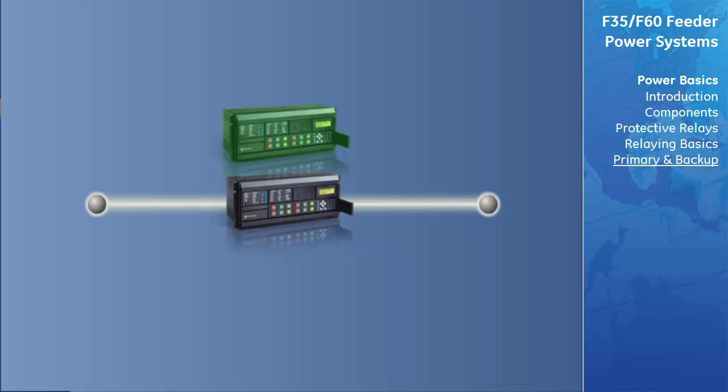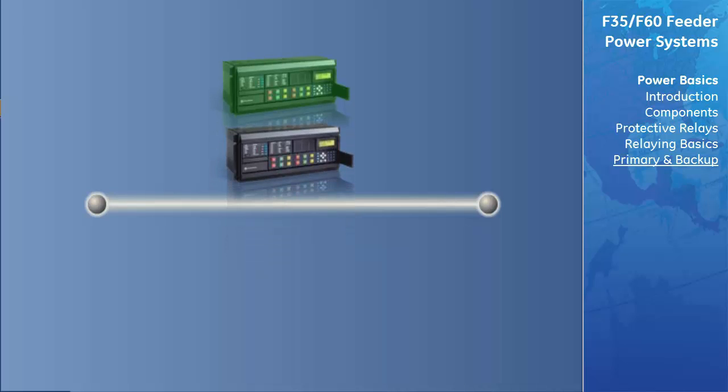Local backup protection is often used to protect against failure of both the primary relaying system and the associated circuit breaker. The only potential drawback is that local backup relaying often uses the same CTs, VTs, and circuit breakers, which can fail, likely resulting in both the primary and local backup relay also failing.